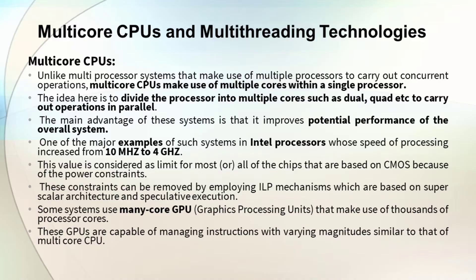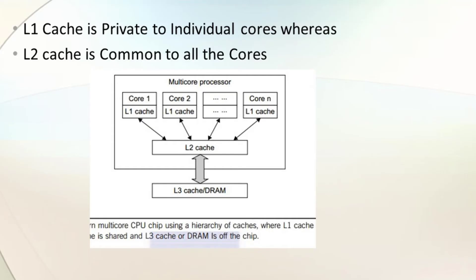Looking at the basic structure, there are different cores — core 1 through core N. The L1 cache is private to each core, while the L2 cache is common. This is the architecture of a multi-core chip.